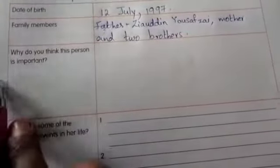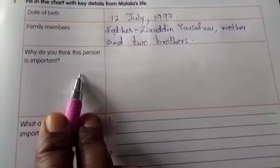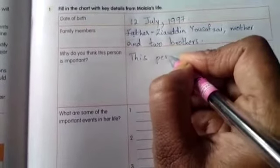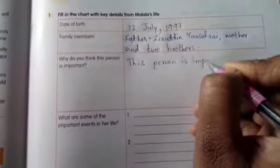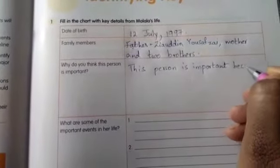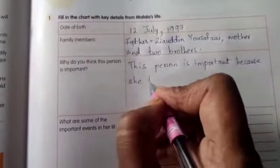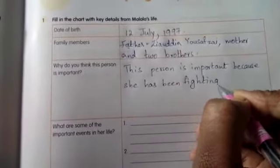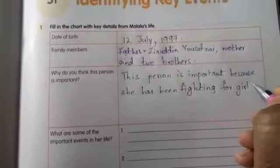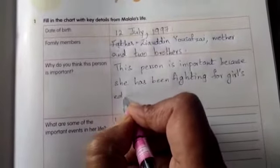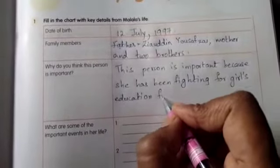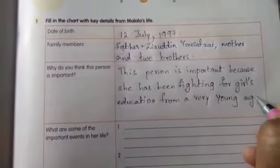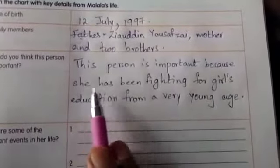See the third question: Why do you think this person is important? Write down. This person is important because she has been fighting for girls' education from a very young age. Once again I am reading — This person is important because she has been fighting for girls' education from a very young age.